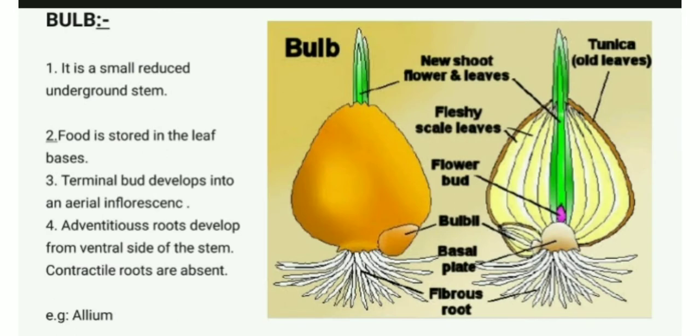Bulb is a small reduced underground stem. Food is stored in the leaf bases. It is dorsiventral differentiated. The terminal bud develops into an aerial inflorescence. The adventitious roots develop from the ventral side of the stem and the contractile roots are absent.